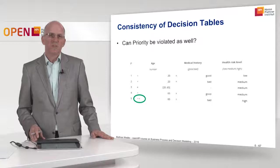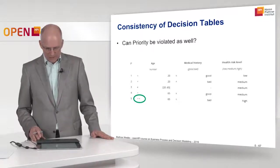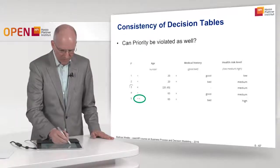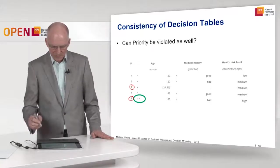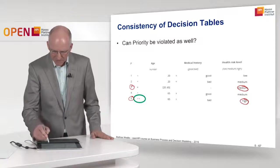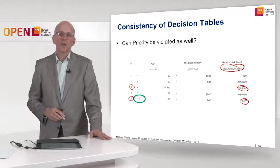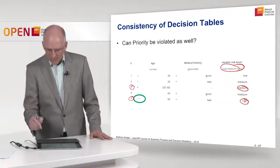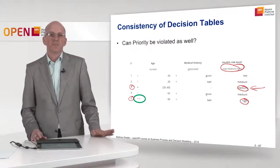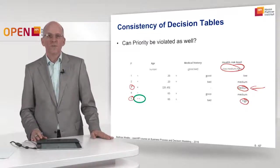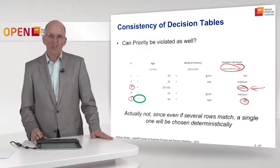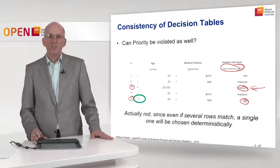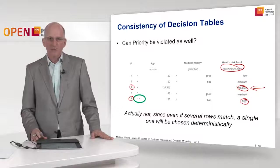How about the priority property — can it be violated? We have the same input: rules 3 and 5 both match for 65, bad, with outputs medium and high. With the priority hit policy, we simply look at the output priority, and that priority ordering ensures medium comes before high. So we just return medium. There is no violation — this is perfectly normal behavior of the priority single hit policy. We cannot check consistency with the priority hit policy, since even if several rows match, a single one is chosen deterministically using the output priorities.